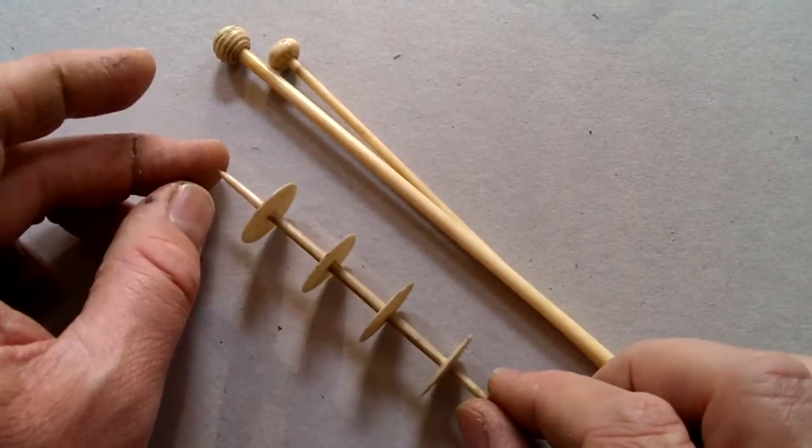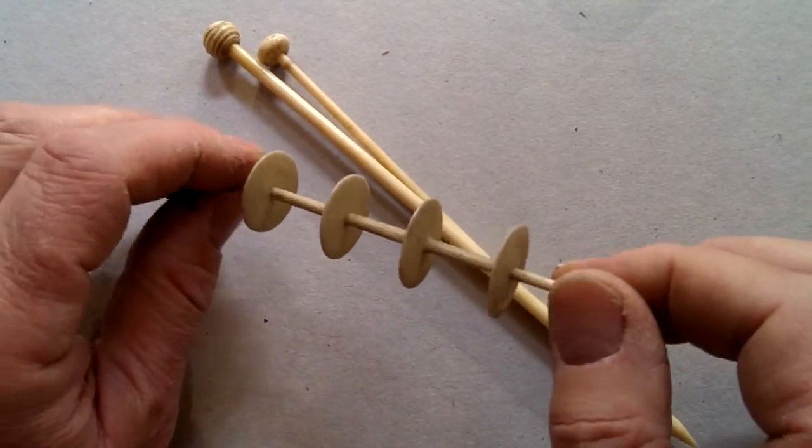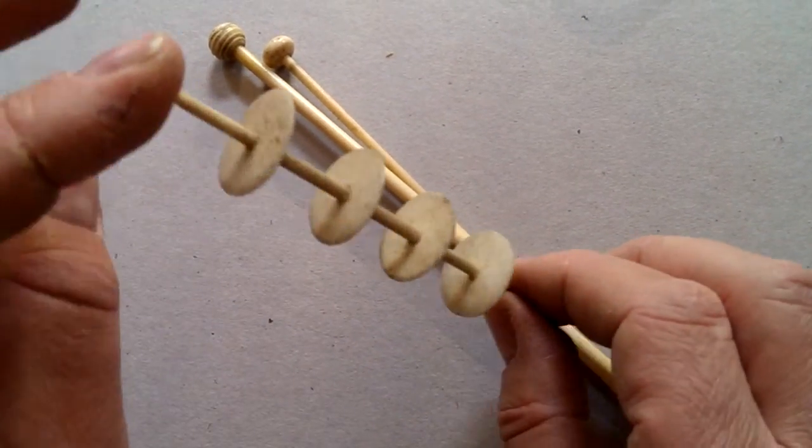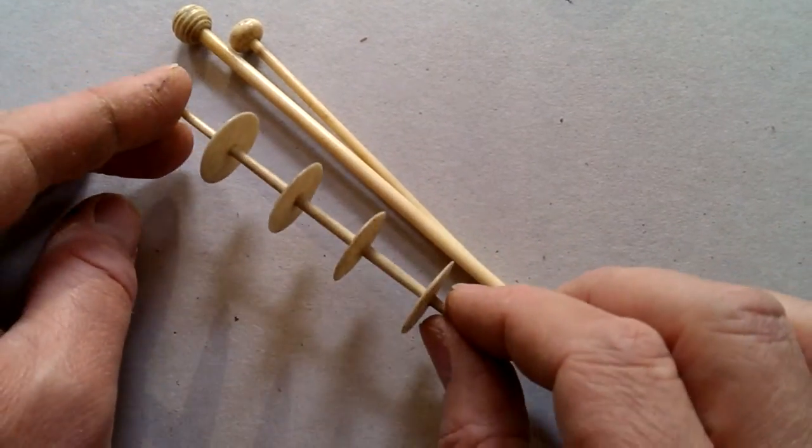And then this rather unusual multiple cotton bobbin. Cotton was wound around these four things and it was in a sewing box or sewing set. Again, very obviously bone, possibly mutton bone. That one I don't know, but there we are.